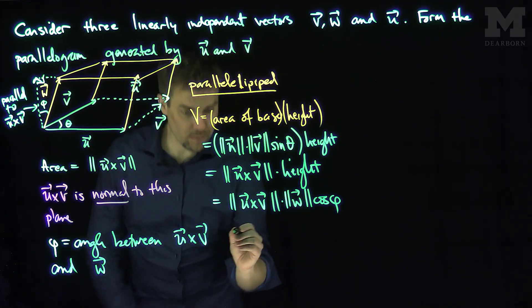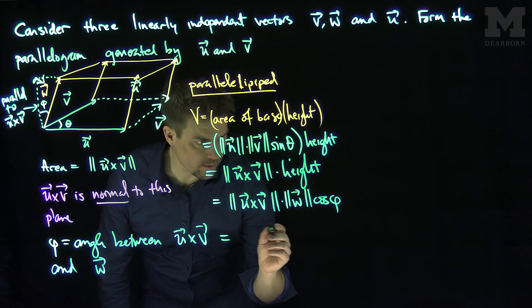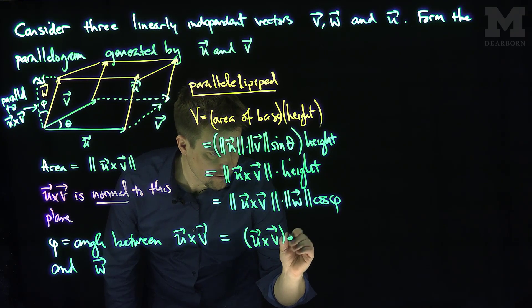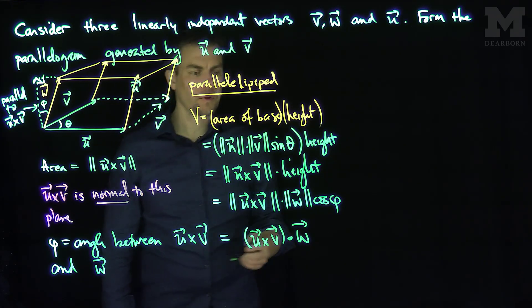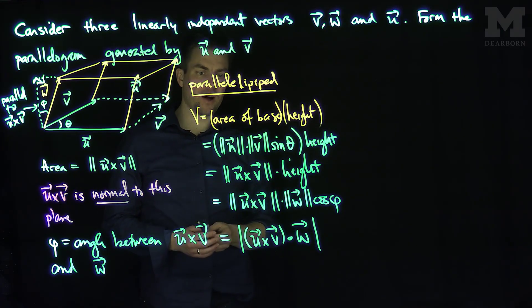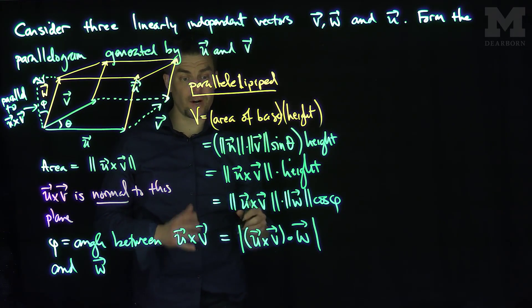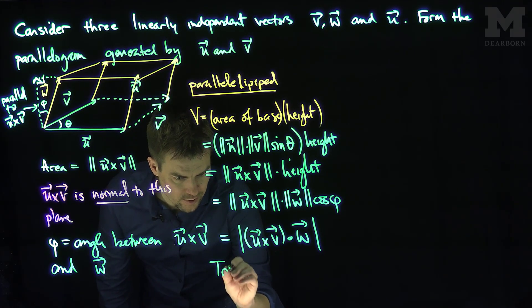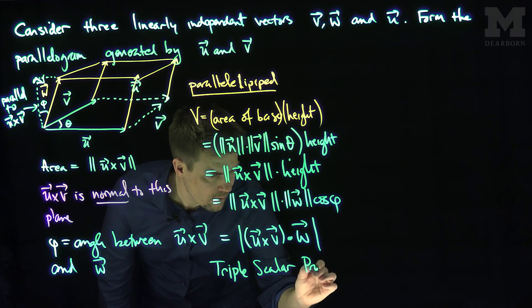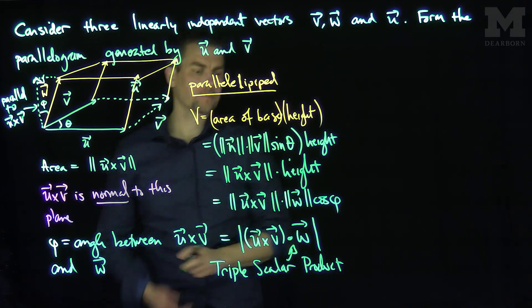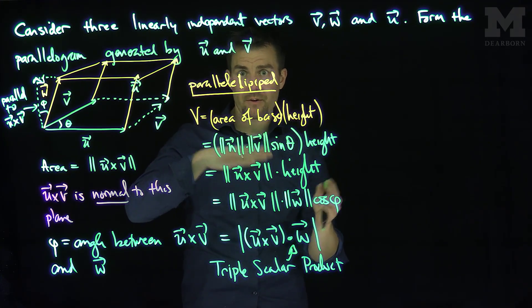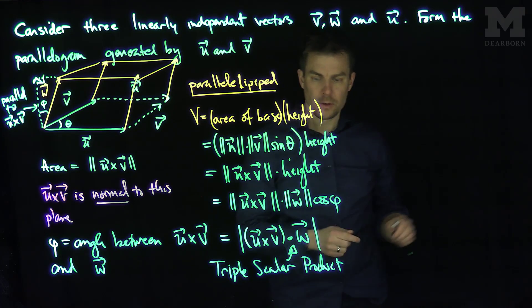Now, we know this is the same thing as giving me the dot product. This is going to be u cross v dot w. And to make sure we have the right orientation, we'll put an absolute value around here to represent the fact that it is a volume. So this is the triple scalar product of u, v, and w. And typically with a triple scalar product, you have u dot v cross w. That's why I put absolute values around everything to make sure the columns are in the right order.